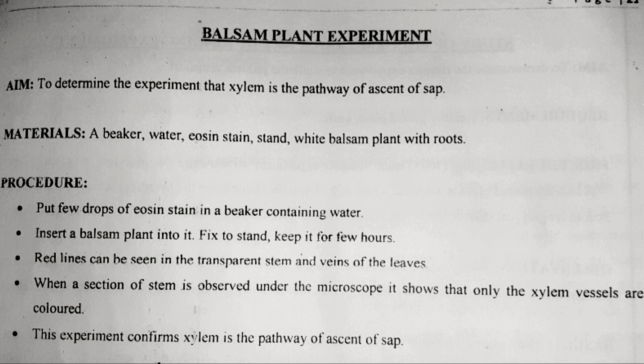Coming to the procedure, it is a very simple procedure. First of all, we need to take beakers — in total, we are going to take four beakers. We fill each beaker with water, then add a few drops of different stains. In the first beaker, we add a few drops of eosin stain. In the second beaker, we add safranin. In the third, we add a few drops of crystal violet. In the fourth beaker, we do not add any stain — it is blank, containing only normal water. Next, we place four balsam plant twigs, one in each of the four beakers.